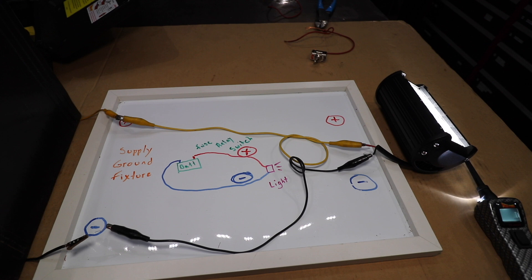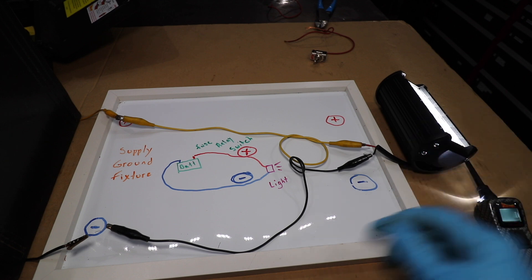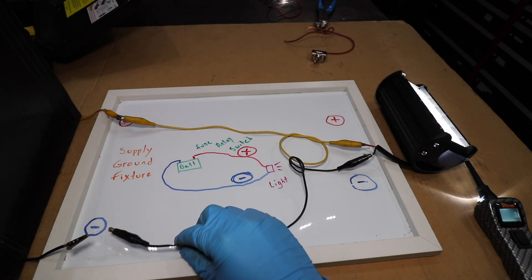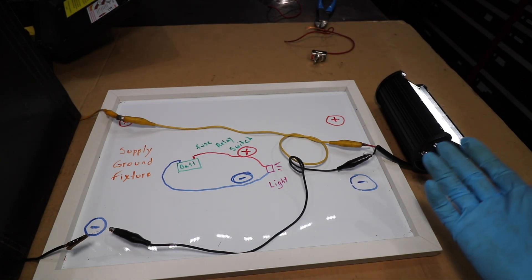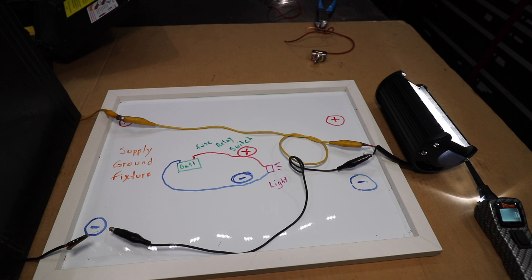All right, let's move on to a bit of a more complicated issue. So the issue this customer is facing is sometimes their light works. Sometimes it doesn't work. Sometimes when you go over bumps, the light kind of flashes.